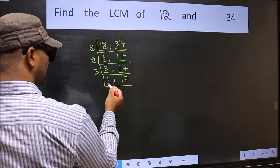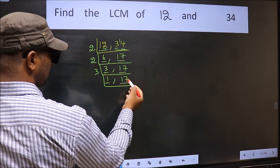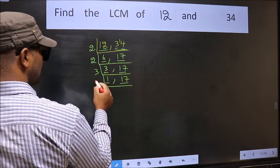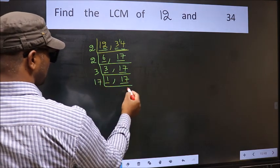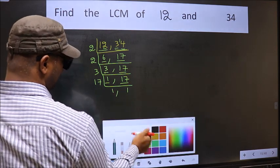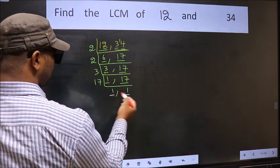Now, we got 1 here. So focus on the other number 17. 17 is a prime number. So 17 once 17. Now, you got 1 in both the places.